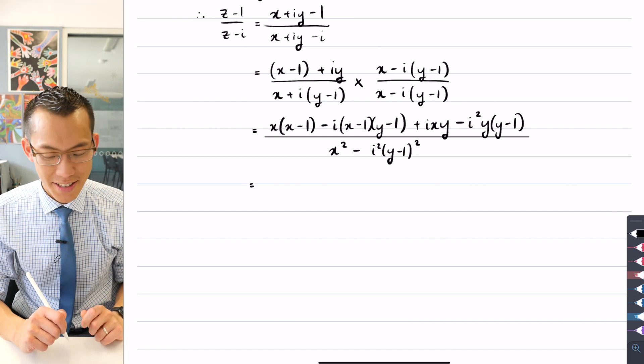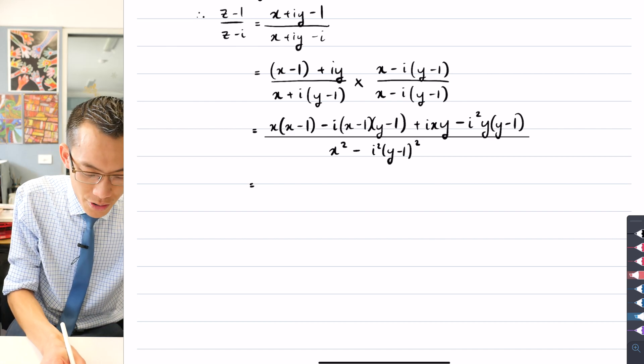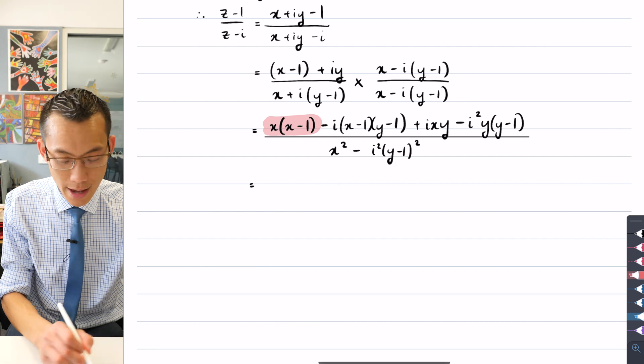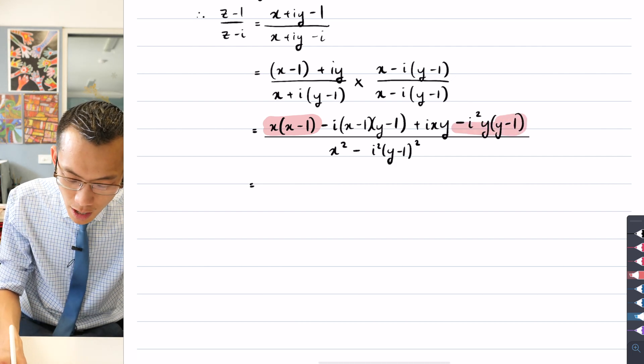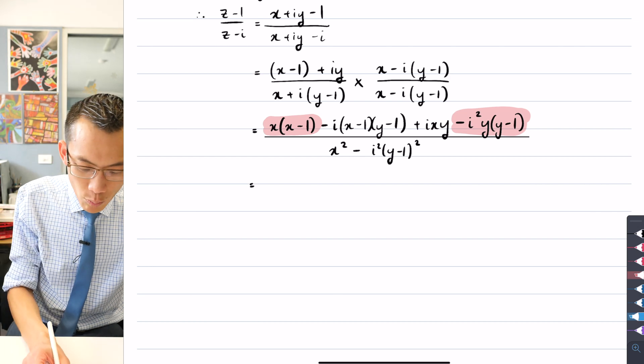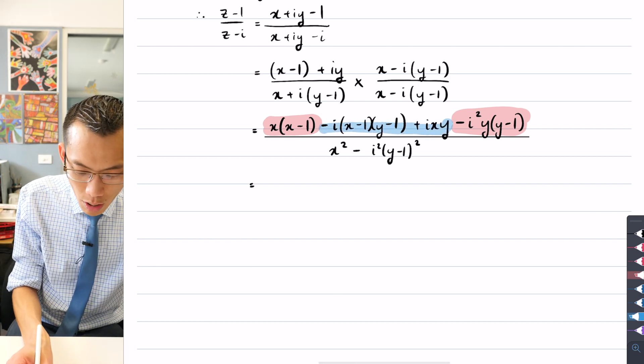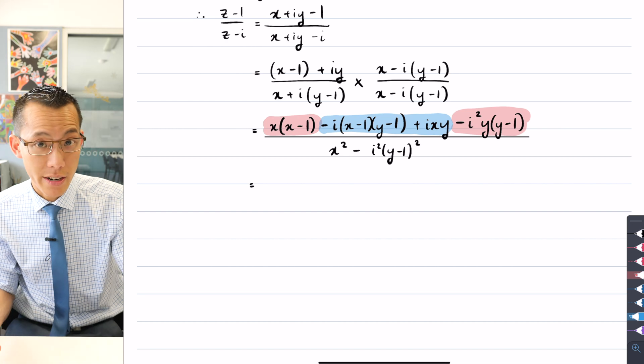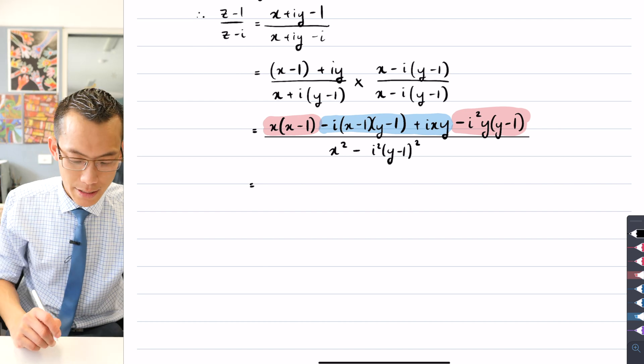All right, can we tidy this up a little bit? We certainly can. So I noticed that there's a real number there, this is going to become a real number once I deal with the minus i squared, and then what you've got left in the middle here, as we so often see, is the imaginary component because you can see the i can factorize out in both cases.